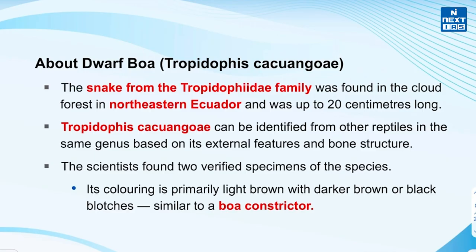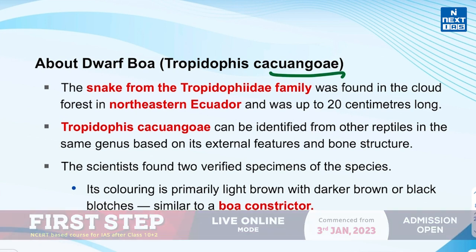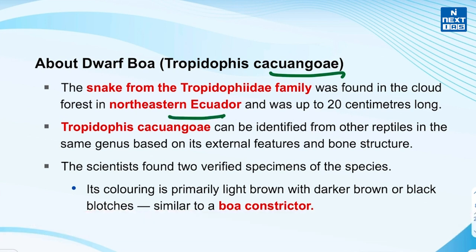The species is known as Tropidophis ekuwangai. It is a snake from the Tropidophiidae family and its name honors Dolores Kekuwango, an early 20th century pioneer in the fight for indigenous and farmers' rights in Ecuador. It is found in the cloud forest in northeastern Ecuador, is up to 20 centimeters long, and can be identified from other reptiles in the same genus based on its external features and bone structure. Scientists found two verified specimens of this species.